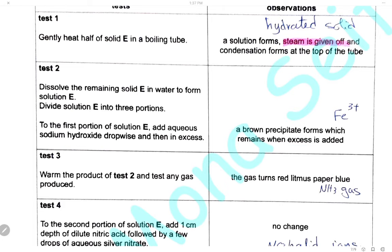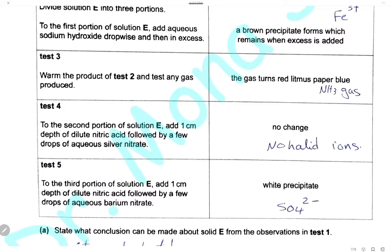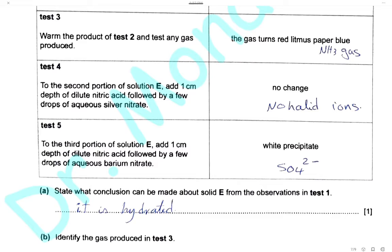In test 4, to the second portion of solution E, add dilute nitric acid followed by silver nitrate. The observation is no change, meaning there are no halide ions — no chloride, bromide, or iodide ions. In test 5, to the third portion of solution E, add dilute nitric acid followed by barium nitrate: a white precipitate forms, characteristic of sulfate ions, because sulfate forms an insoluble white precipitate of barium sulfate.